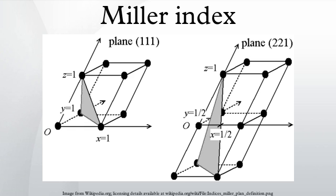If one of the indices is zero, it means that the planes do not intersect that axis. Considering only planes intersecting one or more lattice points, the perpendicular distance d between adjacent lattice planes is related to the reciprocal lattice vector orthogonal to the planes by the formula.